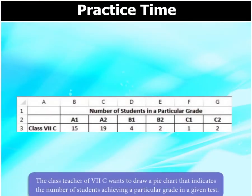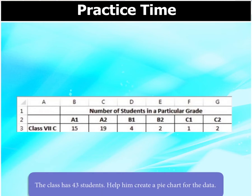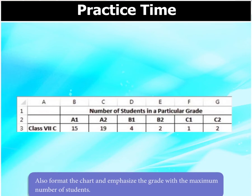The class teacher of 7C wants to draw a pie chart that indicates the number of students achieving a particular grade in a given test. The class has 43 students. Help him create a pie chart for the data. Also, format the chart and emphasize the grade with the maximum number of students.